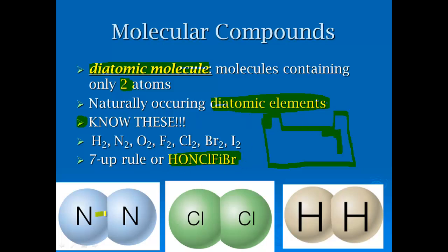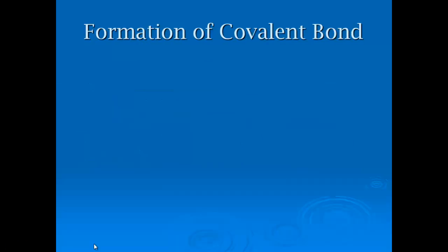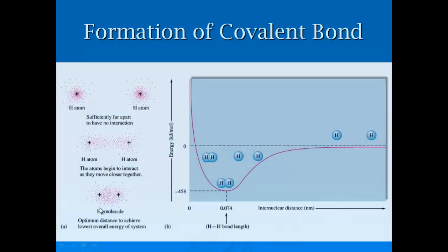This is just showing you how we find them — we find these diatomic elements in pairs in nature. So nitrogen, chlorine, and hydrogen are all found in pairs.